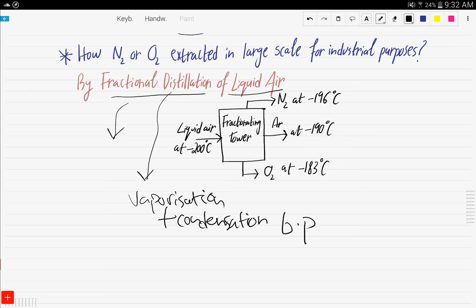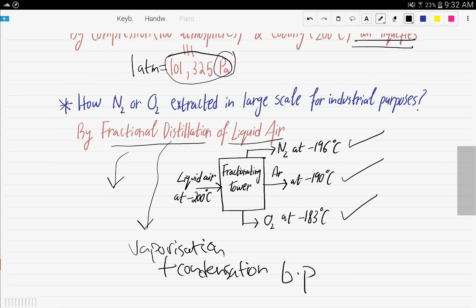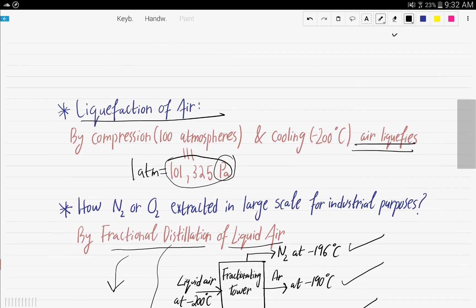Liquid air enters the fractionating tower where fractional distillation takes place at negative 200 degrees Celsius. Nitrogen is obtained at negative 196 degrees Celsius, argon is obtained at negative 190 degrees Celsius, and oxygen is obtained at negative 183 degrees Celsius. I think we're done with this video.